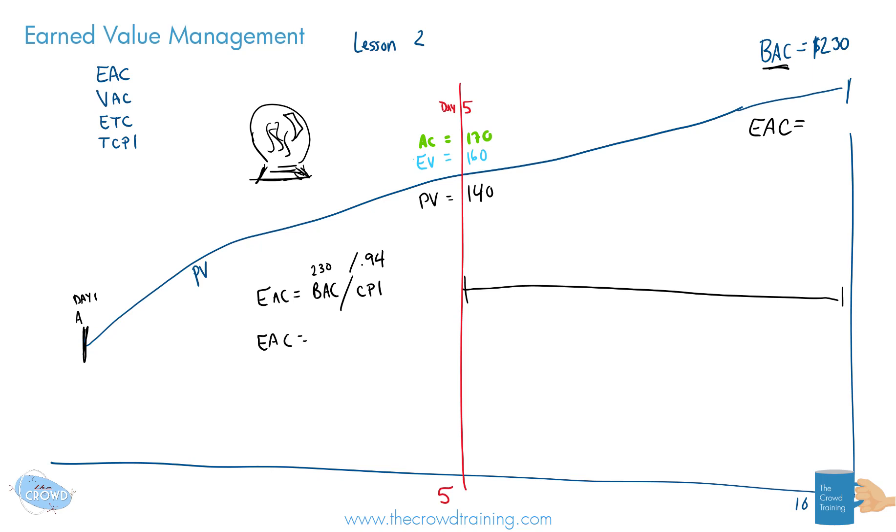Let's take a look at the other equations first. Another equation is to take the actual costs up to this point plus that budget at completion, subtracting anything that has been earned up to this point. So we've actually spent $170, and the budget at completion was expected to be $230, and we've already earned $160. So by that measurement, if we were to take, I'll do a different color here, so $230 minus $160 gives us about $70 left. And that's $170 here, equals about $240.